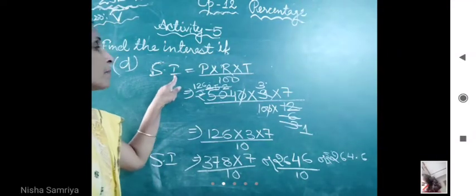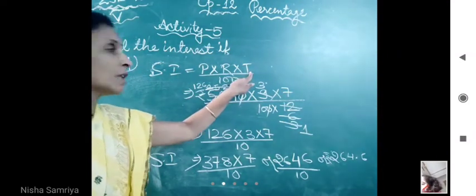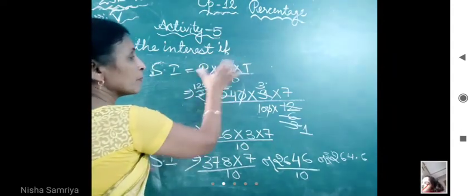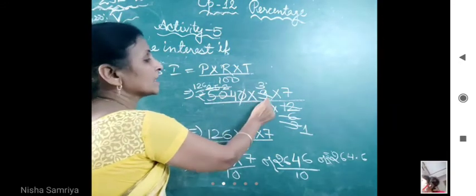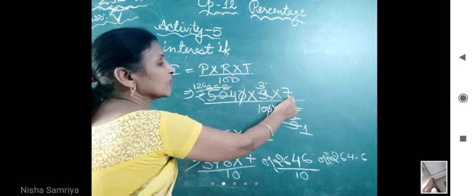Students, first you write the formula: simple interest is equal to P into R into T upon 100. Then we substitute all the values we have. That is, principle is given 5040, then multiply rate is 9, then multiply time. Time is 7 months.